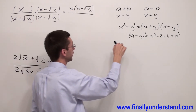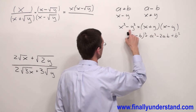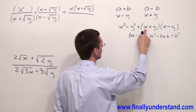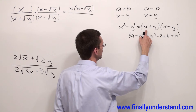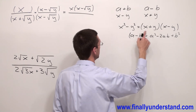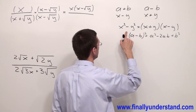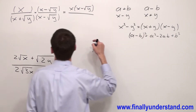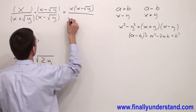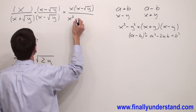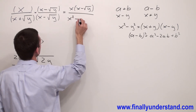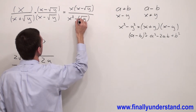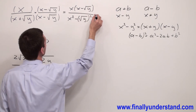We're supposed to apply again this formula — the formula for difference of perfect squares — which says that anytime we have an expression multiplied by its conjugate, this is equal to the difference of these two terms. That's why I'm going to have x squared minus (square root of y) squared.